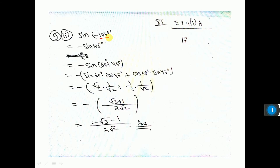For sin(-105°): using sin(-θ) = -sin θ, we need -sin 105°. Since 105° = 60° + 45°, use sin(A + B) = sin A cos B + cos A sin B. Substituting: sin 60° = √3/2, cos 45° = 1/√2, cos 60° = 1/2, sin 45° = 1/√2. The LCM gives 2√2, numerator is -(√3 + 1), so the answer is -(√3 + 1)/(2√2).